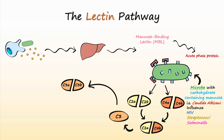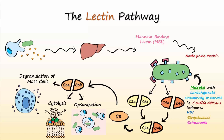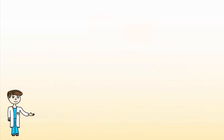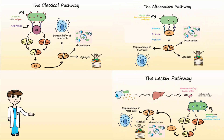Activated C3 initiates opsonization, cytolysis, and degranulation of mast cells. Here's a summary of all three pathways. Thanks for watching.